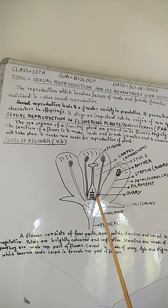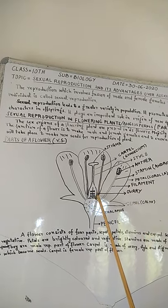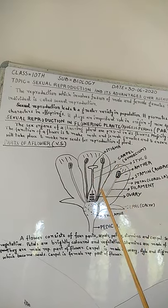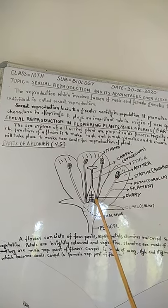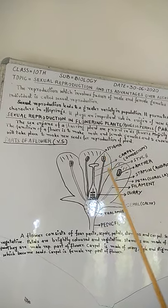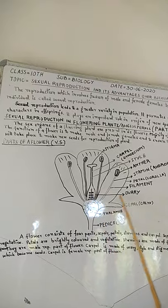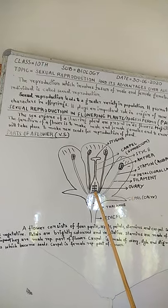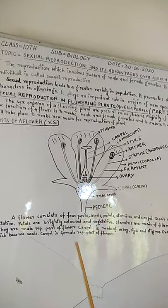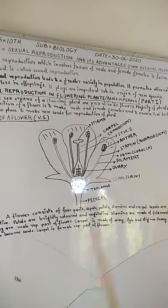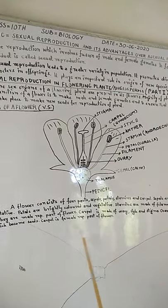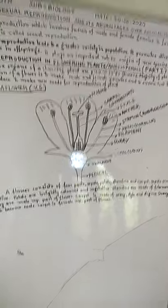Then we have the fourth part of the flower, that is the carpel. Carpel consists of three parts: ovary, style, and stigma. The ovary contains ovules which later on convert into seeds. This is the first part of sexual reproduction in flowering plants. I hope that you have understood this.